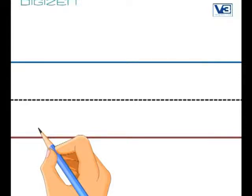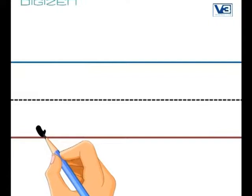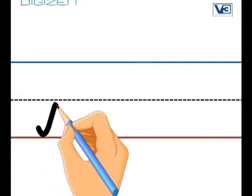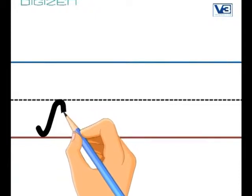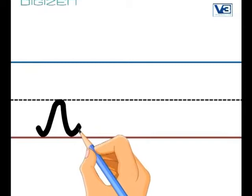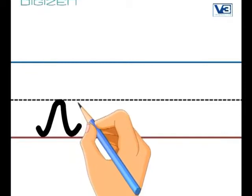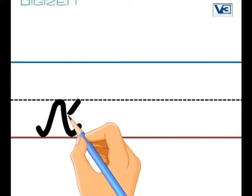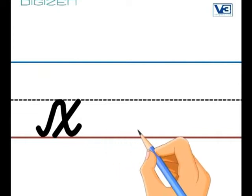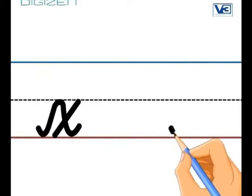We are going to go up to the middle line like we did with our V. Slide down to that bottom line, then go back up to the middle line and cross it in the middle, going all the way to the bottom line again.